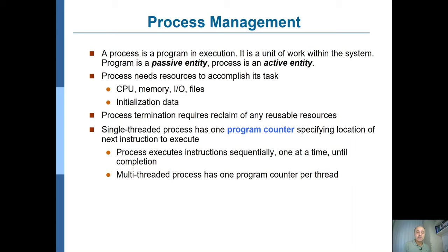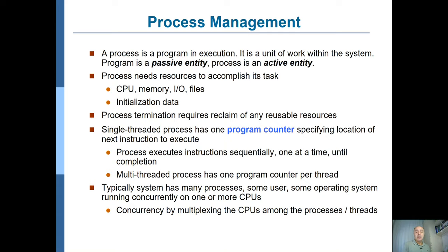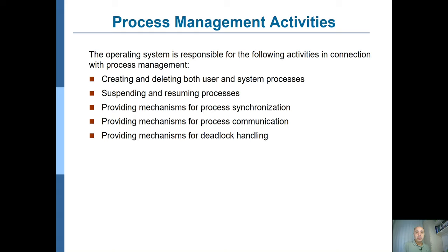Typical systems have many processes — some user processes and some operating system processes — all running concurrently on a single CPU or multiple CPUs. Concurrency is provided by multiplexing the CPUs among these processes or threads.